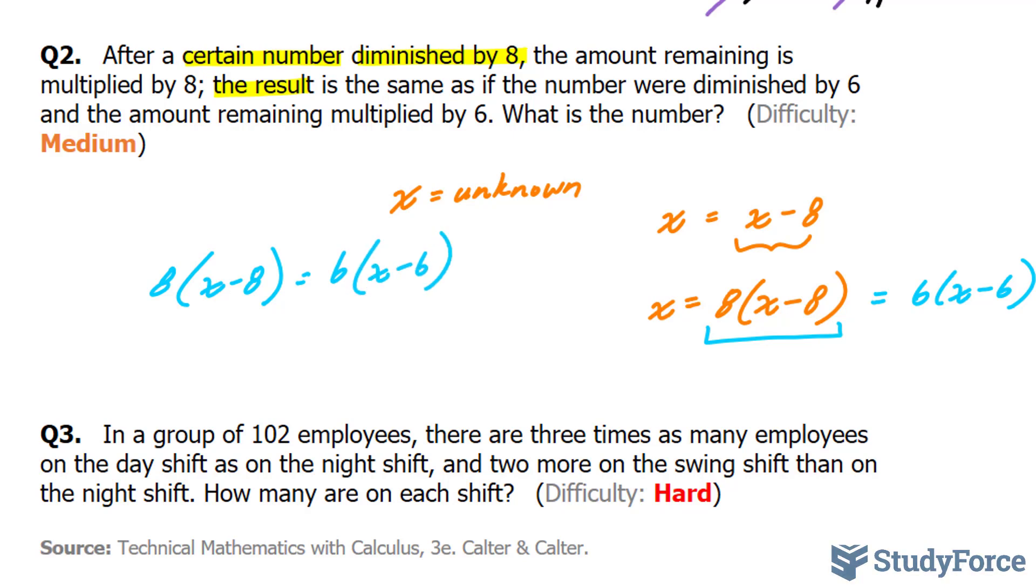We have to solve for x and the first thing that we will do is distribute this 8 and this 6. And that gives us 8x minus 64 is equal to 6x minus 36. We solve for x by taking all the like terms to one side. Take that to that side and take that to the other.